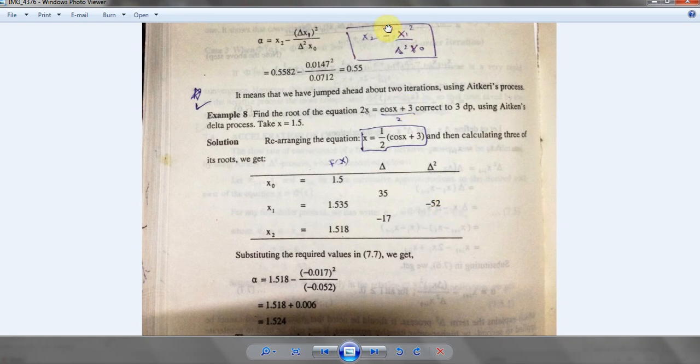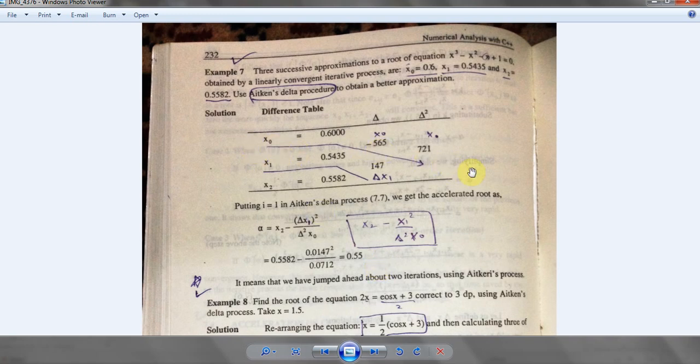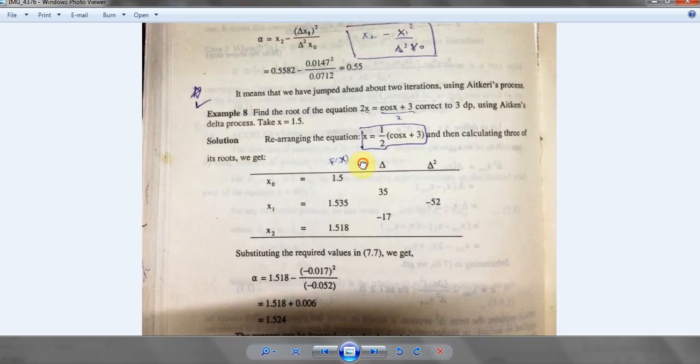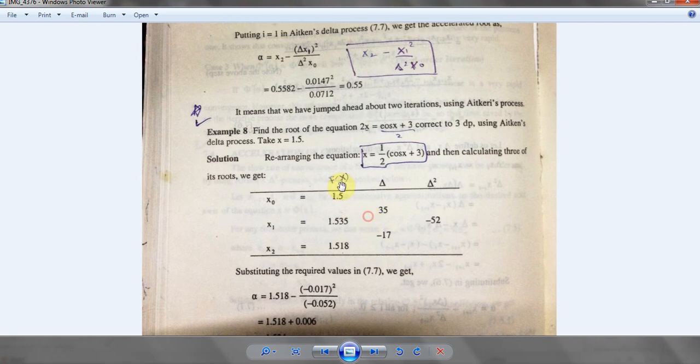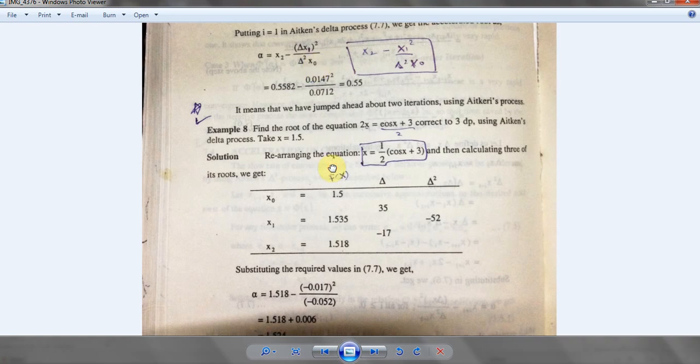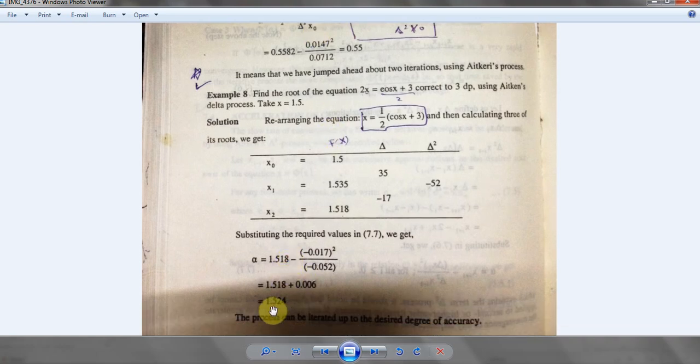Next thing is that we're gonna just say that these terms are over x naught and this term is over x1, and then we're gonna push this data into a trade formula. That is alpha is equal to x2 minus delta x1 squared over delta squared x0. And after putting the values, we're gonna get 1.524.